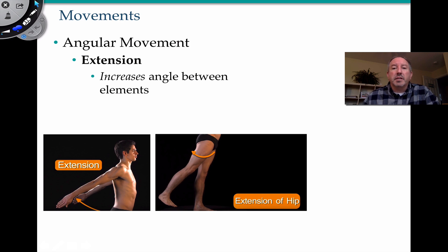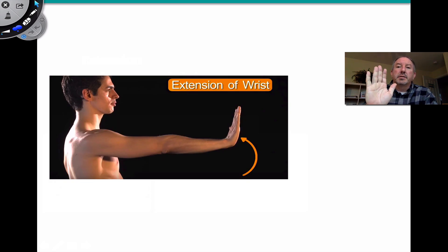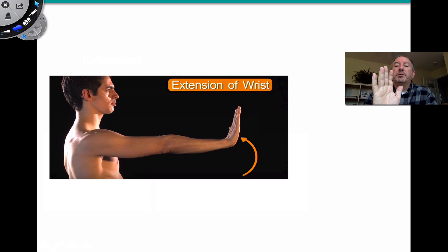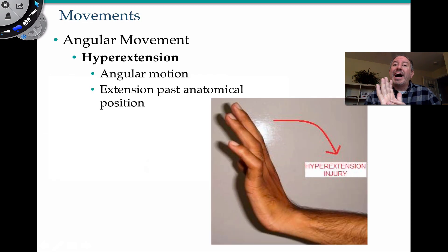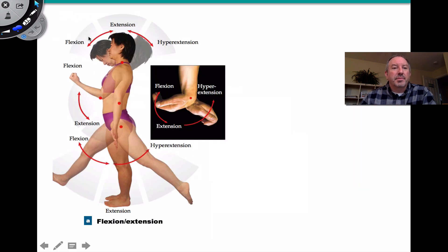Extension increases the angle between elements. You can extend your arms backward, or you can have extension of the hip or extension of the wrist. You can also overextend — for example, if you're falling and something pushes your wrist back — and that is known as hyperextension. It's an angular motion past the anatomical position, and injury can occur. Here's a diagram showing flexion, extension, and hyperextension of the leg.